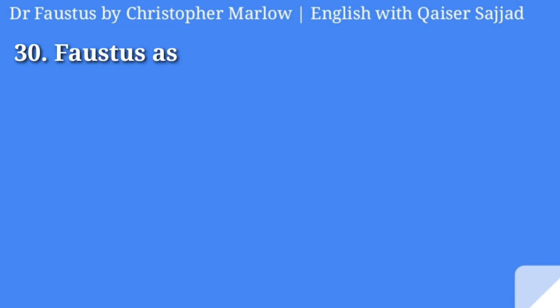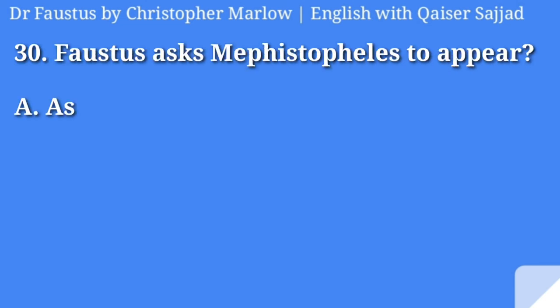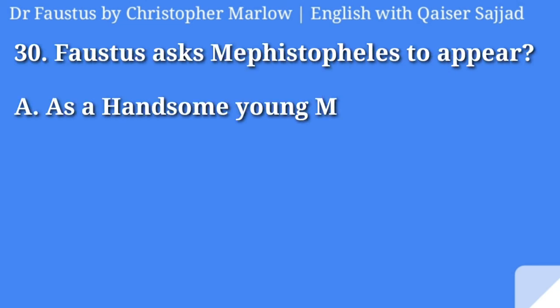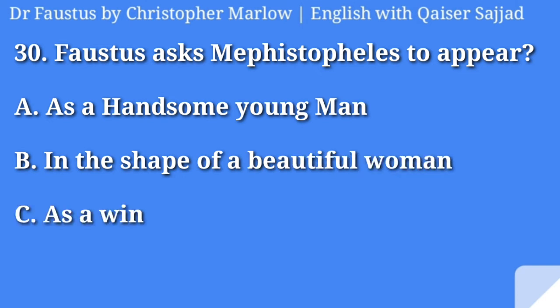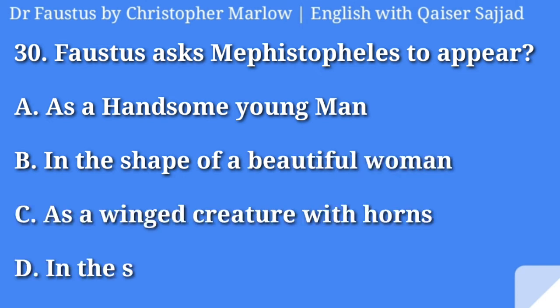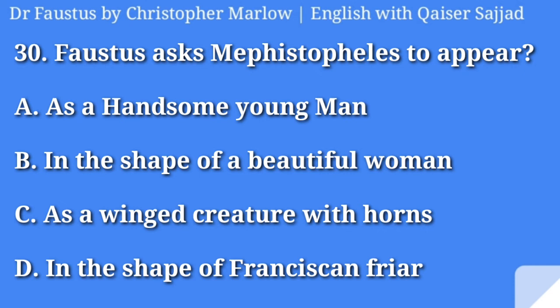Faustus asks Mephistopheles to appear as: a handsome young man, in the shape of a beautiful woman, as a winged creature with horns, or in the shape of a Franciscan friar? Answer is option D, in the shape of a Franciscan friar.